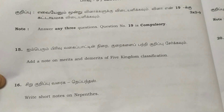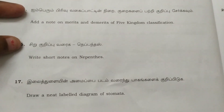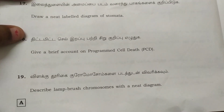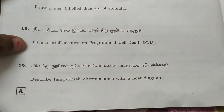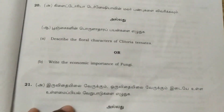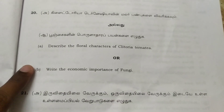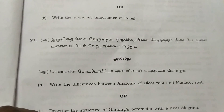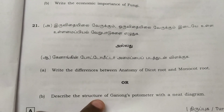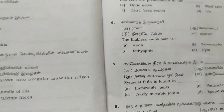Next, three-mark questions — the 19th one is compulsory. Merits and demerits of Five Kingdom classification. Write a note on Nepenthes. Stomata. Programmed cell death (PCD). Lampbrush chromosome with a neat diagram. 19th question: Difference between anatomy of dicot root and monocot root. The structure of the ganong potometer with a neat diagram.